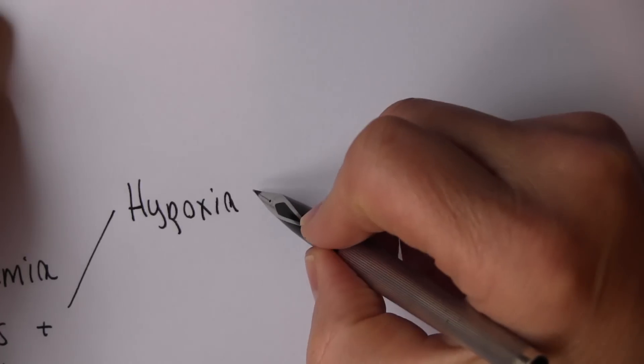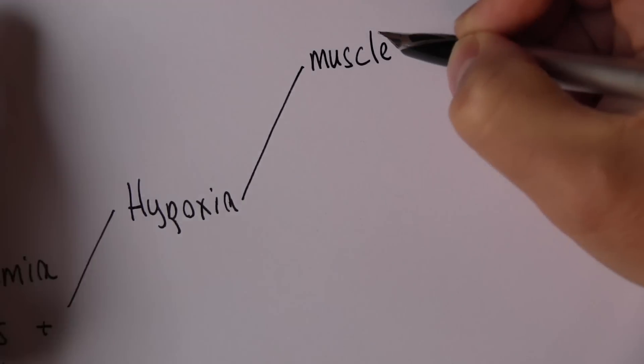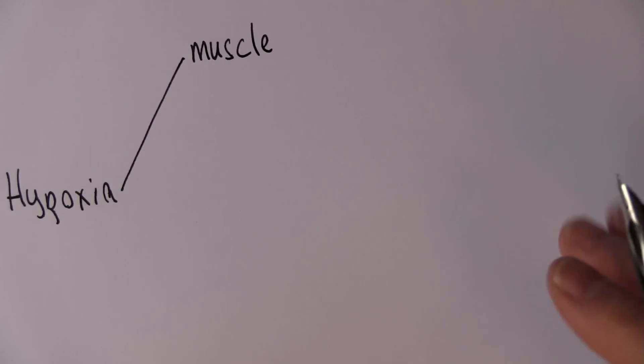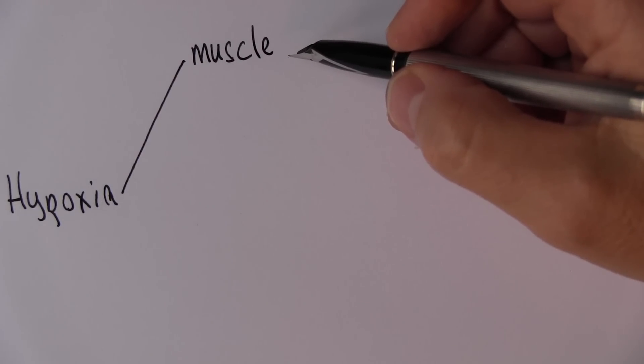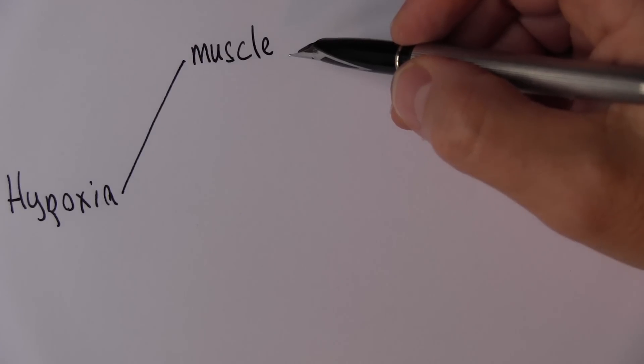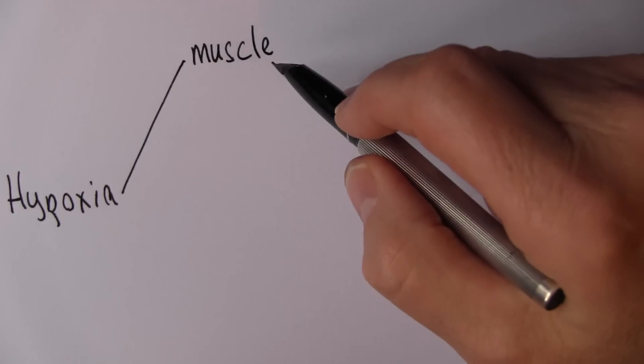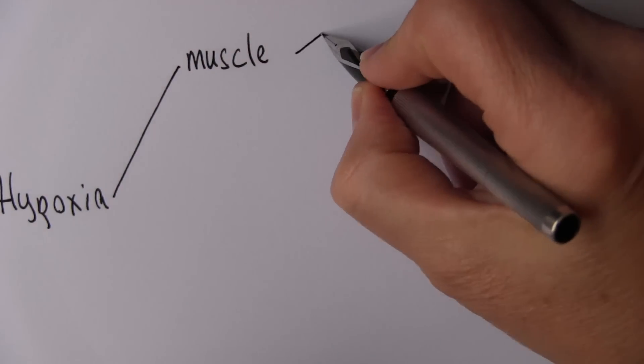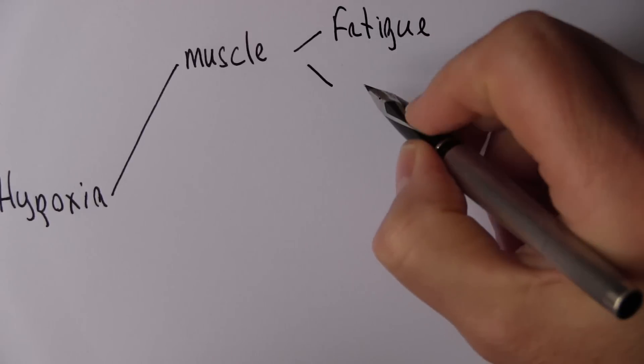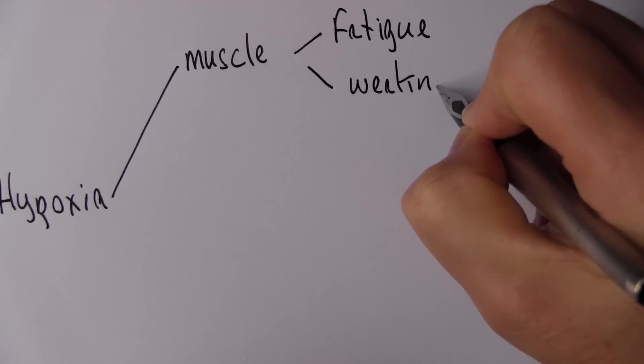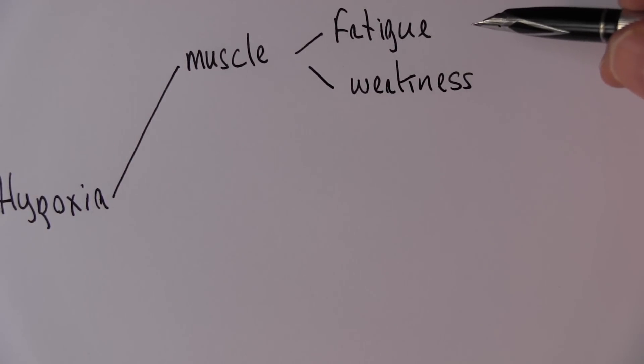Now one metabolically demanding tissue of course is muscle. The skeletal muscles require lots of oxygen to function properly. They're very energy demanding and they contain a lot of mitochondria in the muscle cells. So if there's hypoxia in the muscle, there's not enough oxygen in the muscles. This is going to lead to muscle fatigue and muscle weakness.